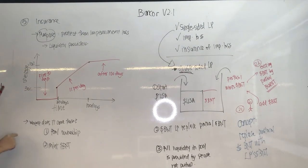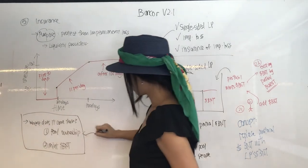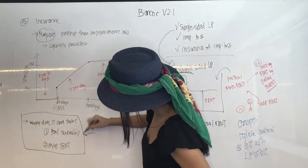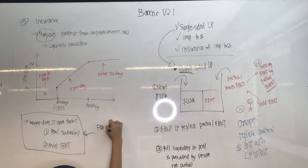So once again, going back to where does the insurance coverage comes from? One, from pool ownership. And that works for single-sided, right? Because then from co-investment, the protocol itself can be generating fees as well.